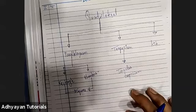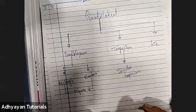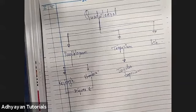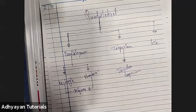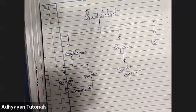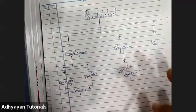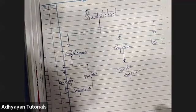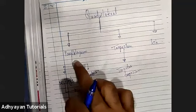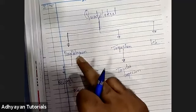Deepika Gupta says the screen is blurred. Must be an internet connection issue, Deepika, because all the other kids say it is quite clear — so just wait a moment and it will get clear. I believe there is no need to draw the family tree diagram of a quadrilateral. We can just move ahead and discuss each one in greater detail. I will be starting with parallelogram.